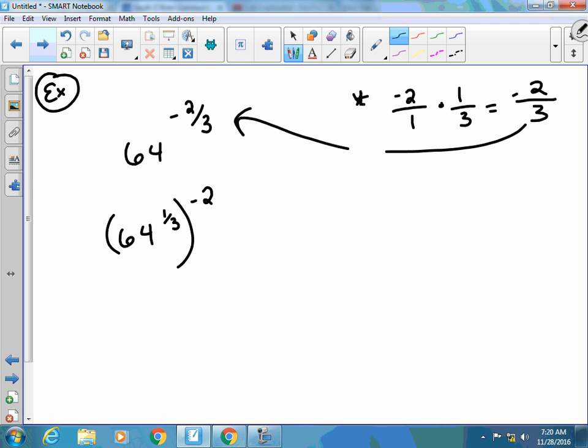So because this is a negative, I'm going to go ahead and flip it. I know I said wait until the last part, but that's when you're dealing with variables. When you're dealing with numbers, you can flip it right away. So I have 1 over 64 to the 1 third.